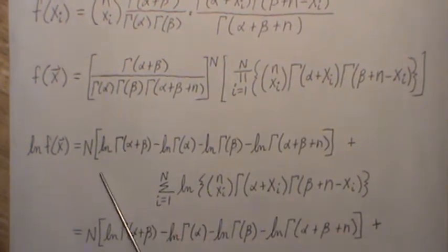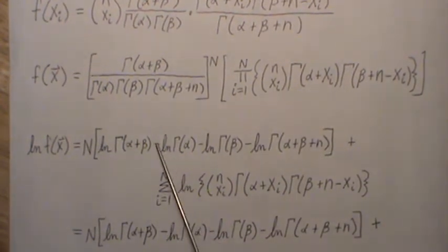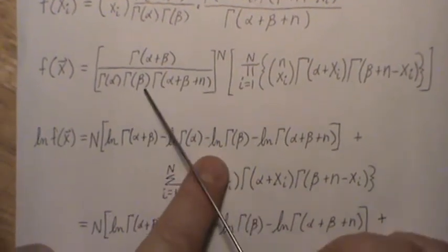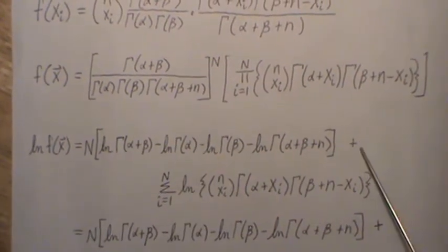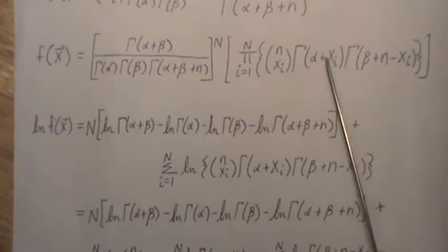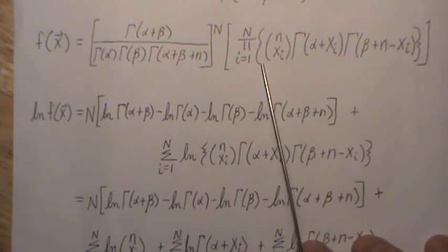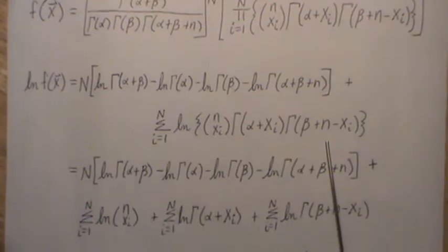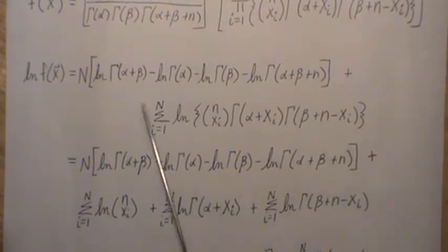The N comes out front and we have the log of this term, then minus this term, minus that term, minus this term, and then plus because that's a product. The log of a product is the sum of the logs, so it's the log of all this — but since this is itself a product, we can rewrite it as a sum.